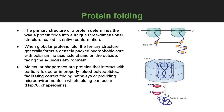When ribosomes synthesize proteins, specific proteins called heat shock proteins help give the newly made protein its correct three-dimensional structure. Hsp70 helps during protein synthesis, while heat shock protein 60 forms a barrel-shaped structure that catalyzes the renaturation of damaged proteins after exposure to different denaturing agents.